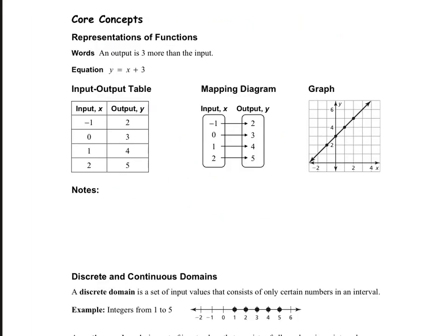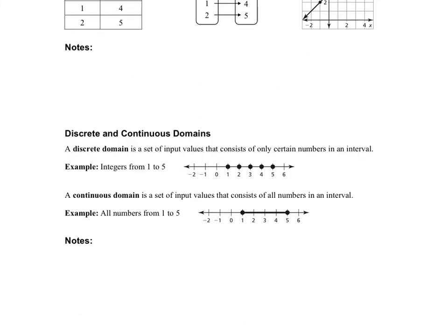There are several different ways to represent functions. We could have words — for example, 'an output is three more than the input.' We could have an equation like y equals x plus three. You can have an input-output table where you put some inputs in and see what the outputs are. That table could be written as a mapping diagram, or you could put it as a graph. These are all different ways to represent a function.